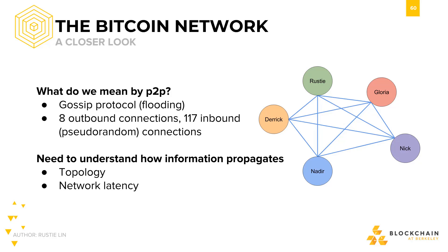The Bitcoin network is peer-to-peer, and there's no central entity sending or receiving messages for us. The way that messages get sent around the network is through a gossip protocol, which is also called flooding. If I want to send out a transaction, I have to tell all the nodes I'm connected to, which we call my neighbors. All of my neighbors tell their neighbors, and their neighbors tell their neighbors, and so on.